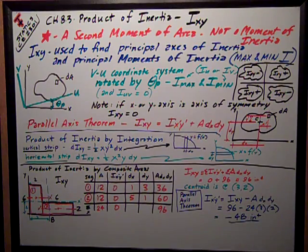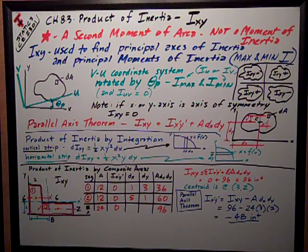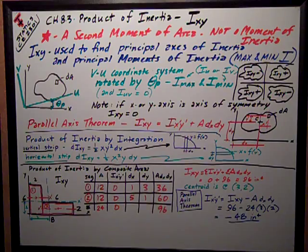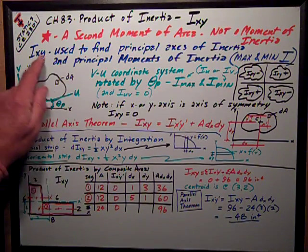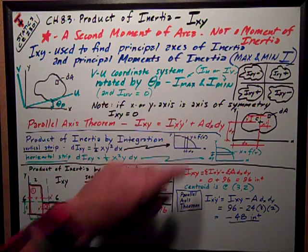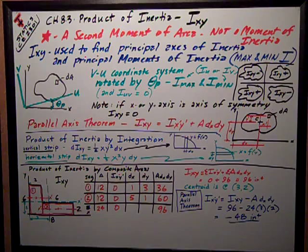There's really no physical thing that you can point to to say what product of inertia is, which is unlike moment of inertia, which is a resistance to rotation or measure of the spread or dispersal of an area. But we use IXY because it's very important for finding principal axes of inertia and the principal moments of inertia.